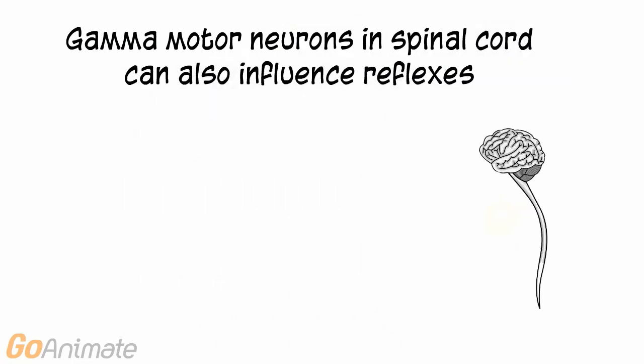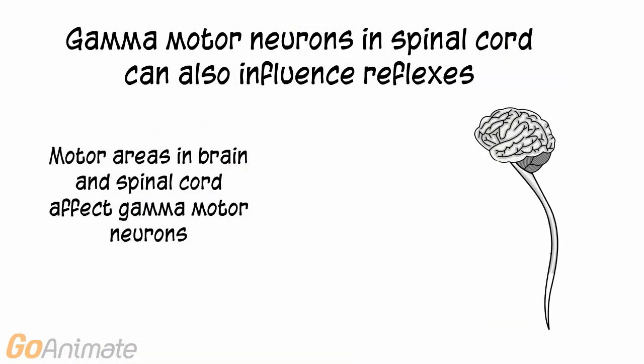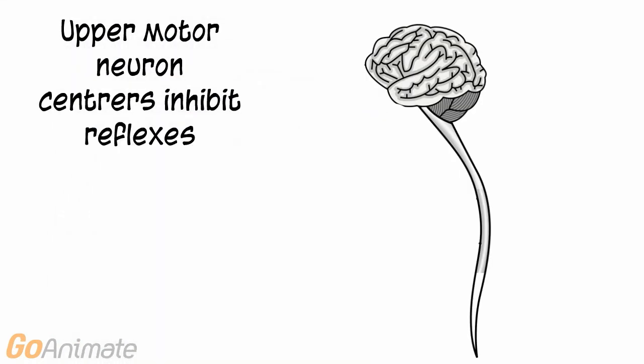There are also gamma motor neurons located in the spinal cord that influence reflexes. These neurons are influenced by motor centers in the brain and spinal cord, and the upper motor neuron centers tend to inhibit reflexes.